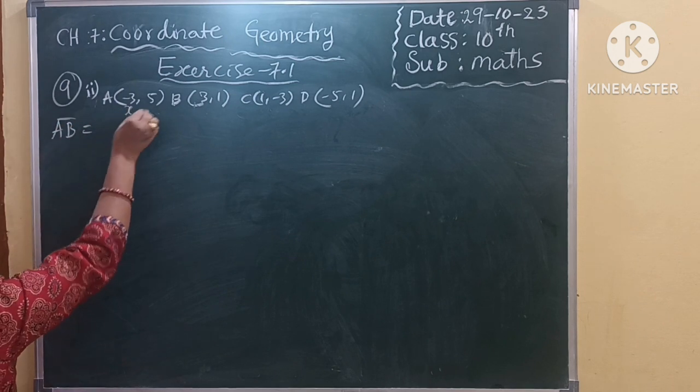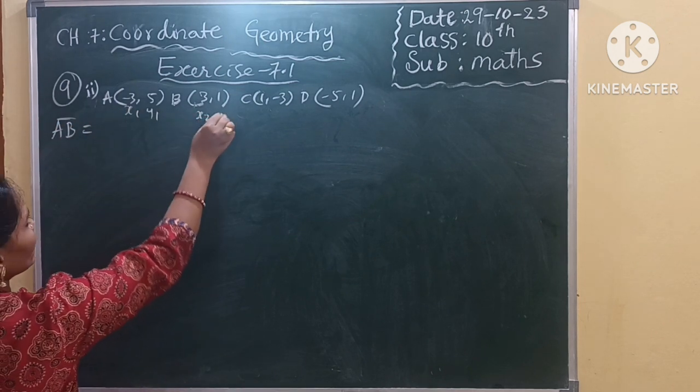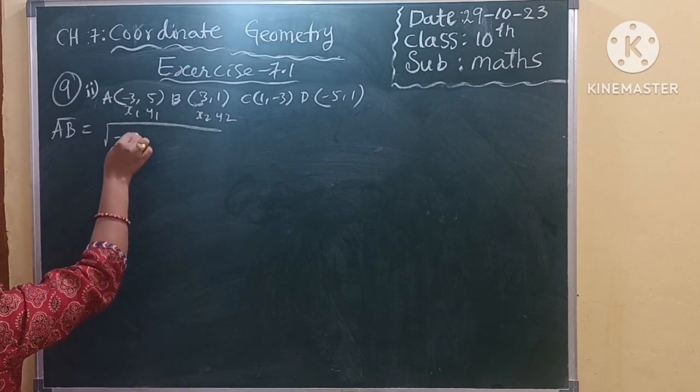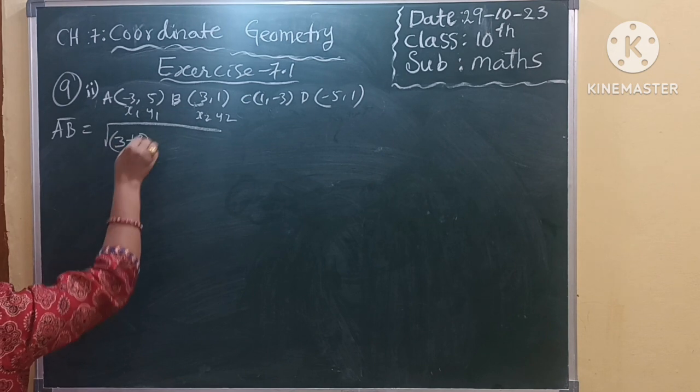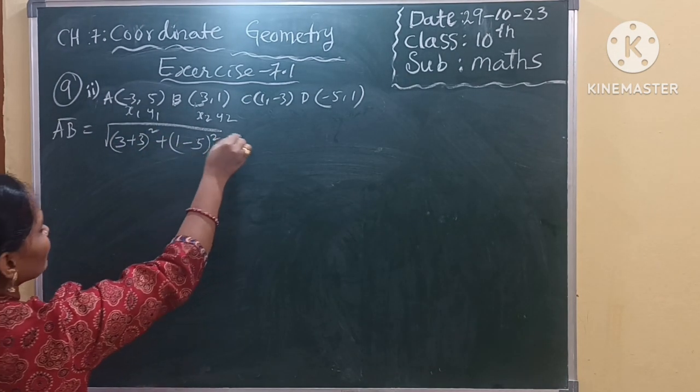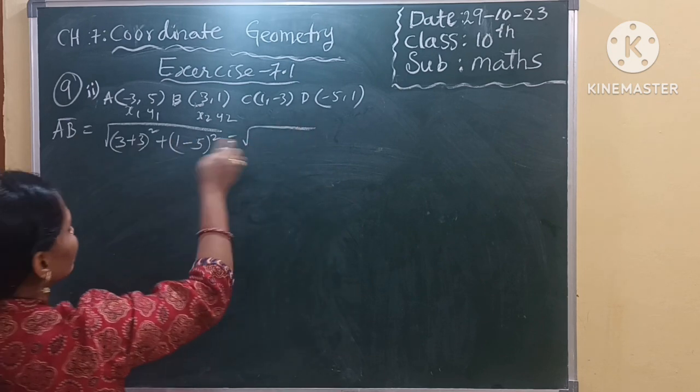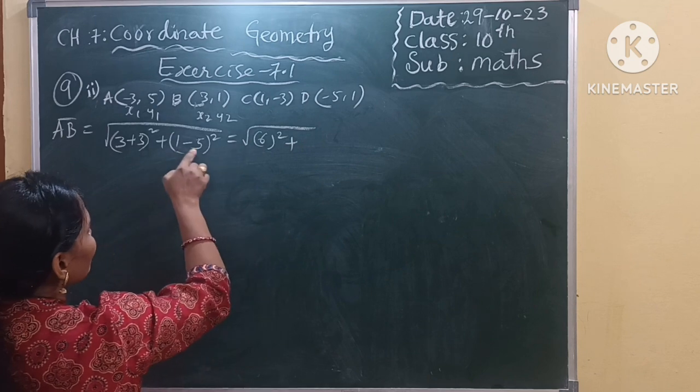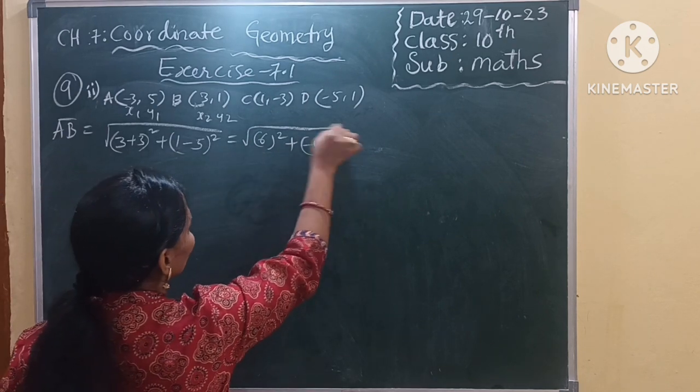So X1, Y1, X2, Y2. Square root of X2 minus X1 whole square plus Y2 minus Y1 whole square, which is equal to here 3 plus 3, 6. 6 square plus 1 minus 4, minus 3 whole square.